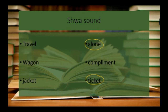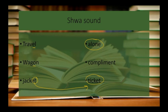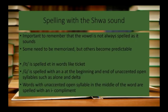Let's look at a few words and decide where we hear the schwa sound. In travel, you should hear that it sounds more like an 'uh' sound than an E sound. In wagon, the O sounds more like an 'ih' when we say it. In jacket, that's another one like ticket — the E-T sounds more like I-T. In a word like compliment, that I doesn't really sound like an I. It's important to remember that the vowel is not always spelled as it sounds — some need to be memorized, but others become predictable.